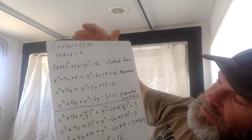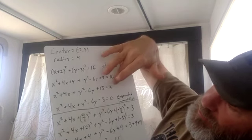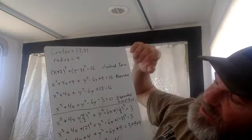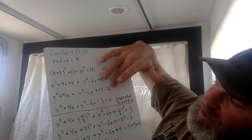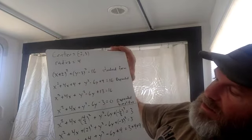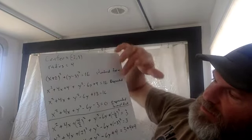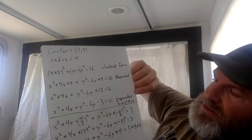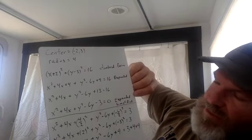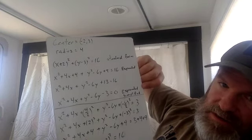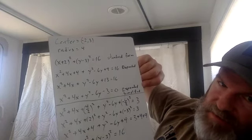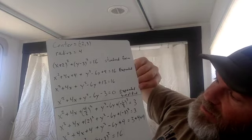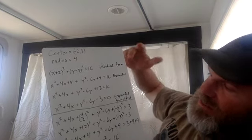Now you can set this all equal to zero if you'd like. You'd subtract 16 to the left and you would get negative three. And that's the expanded form in simplified version — meaning all the like terms are combined.